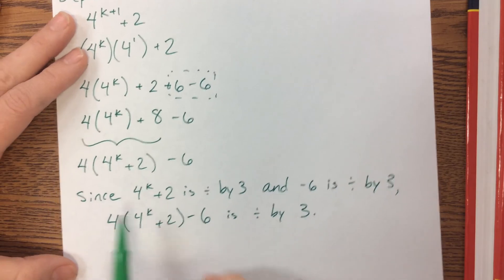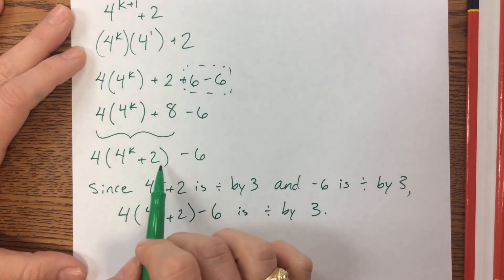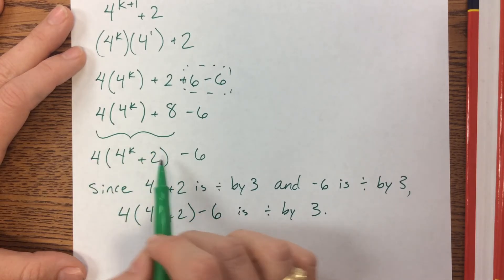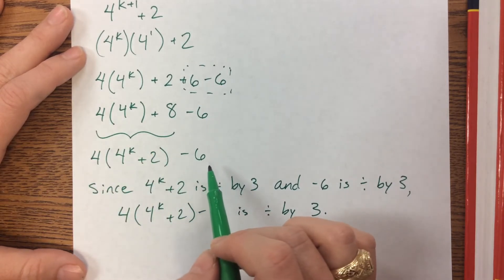So I kind of use this part right here. Since that part is, well since this is divisible by 3, multiplying it by 4 it's still divisible by 3, and we know that 6 is divisible by 3.